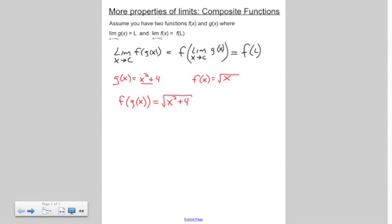All right, so now if we want to find the limit of this, we're going to find the limit of the square root of x squared plus 4 as x is approaching 0. Well, that's pretty straightforward.